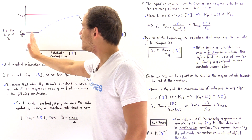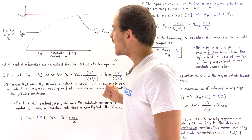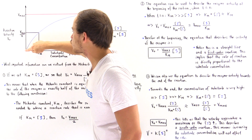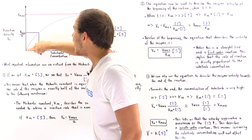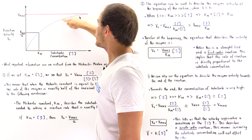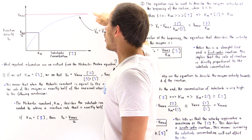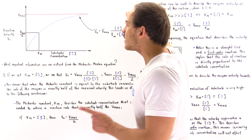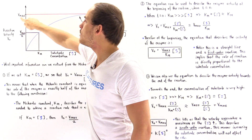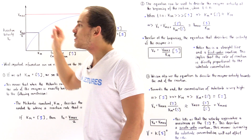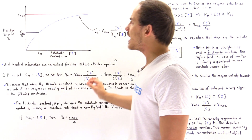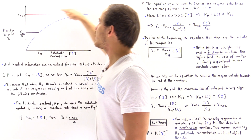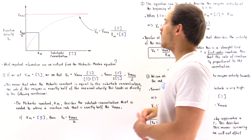Initially, at the beginning of that reaction, we have a relatively straight line, a straight slope, and then the slope begins to decrease and it levels off, eventually approaching asymptotically the maximum velocity — the maximum rate of that enzyme's activity — shown as this red horizontal line.